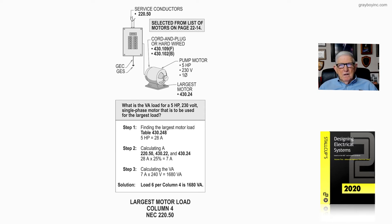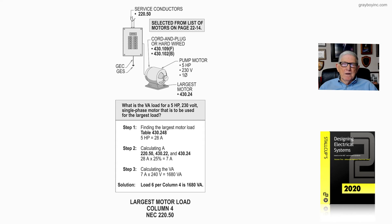So we're going to go to 430.24, and to get the full load current rating of this motor, we reference table 430.248. You would want to reference 430.6A1, which refers you to table 430.248 to select the full load current rating of single phase motors. That 5 horsepower motor would be 28 amps as listed in that table.